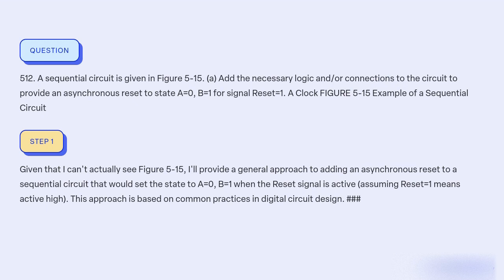Given that I cannot actually see figure 5-15, I will provide a general approach to adding an asynchronous reset to a sequential circuit that would set the state A to 0, B to 1 when the reset signal is active, assuming reset equal to 1 means active high. This approach is based on common practices in digital circuit design.